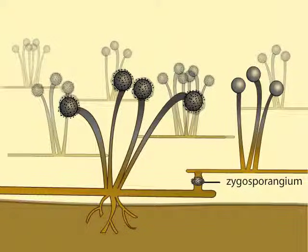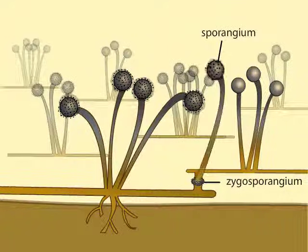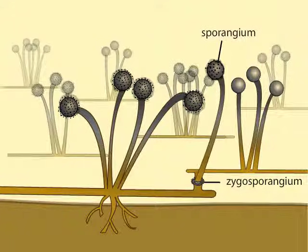The diploid nuclei within the zygosporangium then undergo meiosis and a sporangium sprouts. The sporangium contains the products of meiosis, haploid nuclei that are incorporated into spores. When the sporangium opens, these spores will disperse and germinate to form the next generation of haploid hyphae.